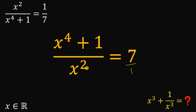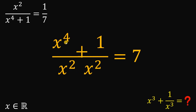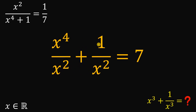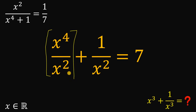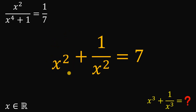We will apply the concept of splitting fractions. We can rewrite x to the fourth power plus one over x squared as x to the fourth power over x squared plus one over x squared — same denominator, so we combine them by adding the numerators. Now x to the fourth power divided by x squared is just x squared.